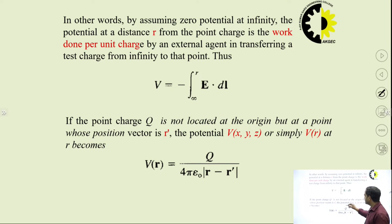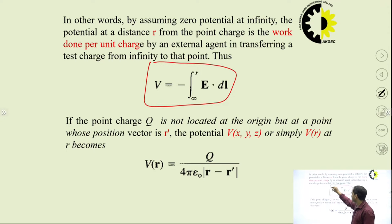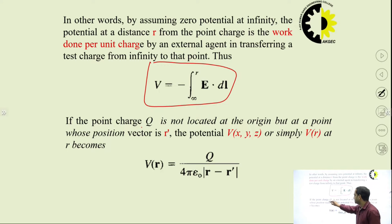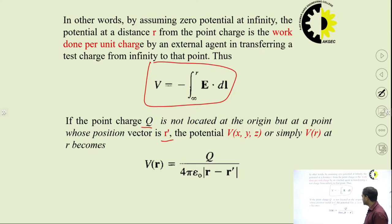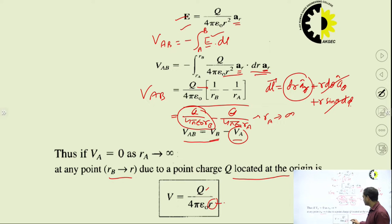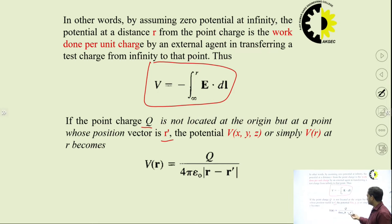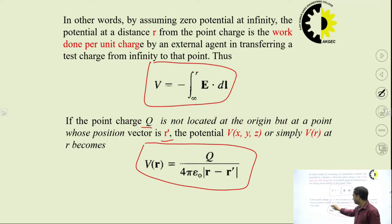Q is the charge responsible for generation of the electric field, and in that electric field we are bringing the charge from infinity to a point at distance R. So the potential becomes V = Q/(4πε₀R). This is the expression from integrating -∫E·dL from infinity to R. Now if the Q charge is not placed at the origin but at some other distance R', then in the expression, in place of R we put |R − R'|.